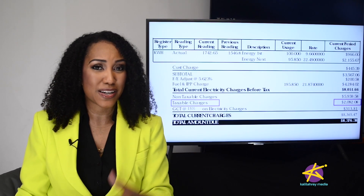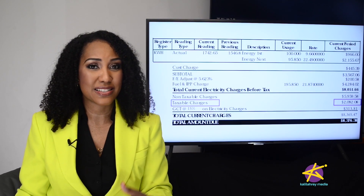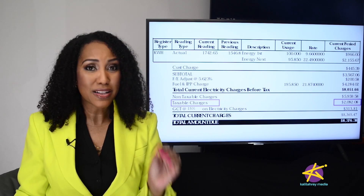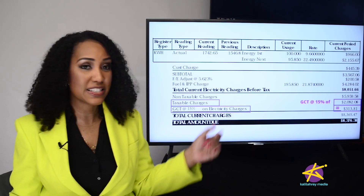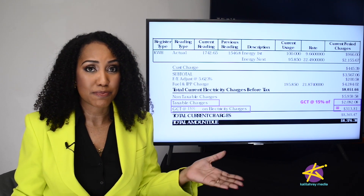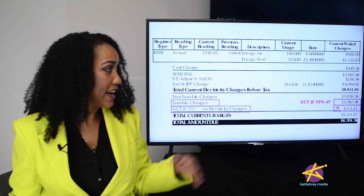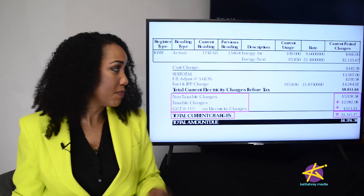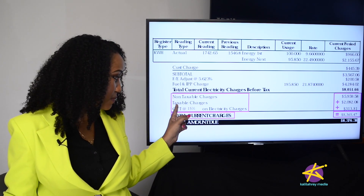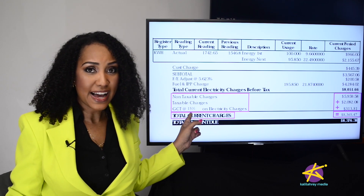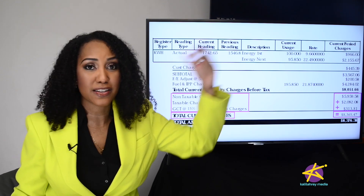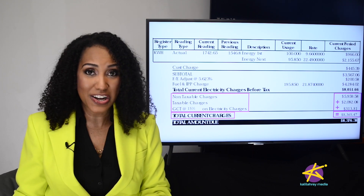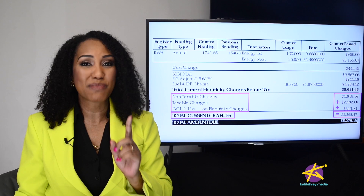It's off by one cent because we've been rounding off the numbers — JPS's system doesn't round off, it's just done by the computers. Now that we have our taxable charges, we multiply by the 15% GCT rate (0.15) and we get $313.81. Then finally, we add up our non-taxable charges, our taxable charges, and our GCT, and we get our total of $8,365.45. Our light bill actually makes sense after all. Complicated, yes, but there is method to this madness.